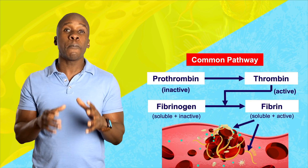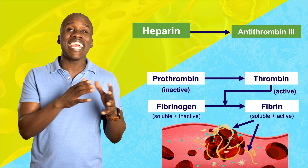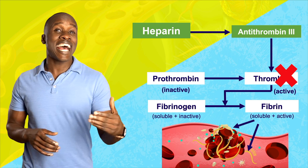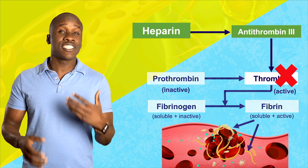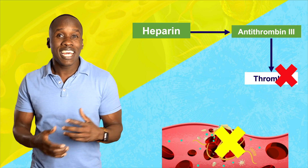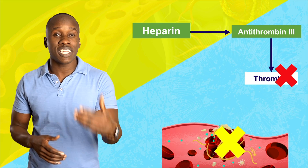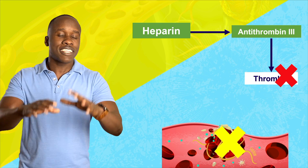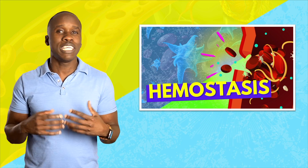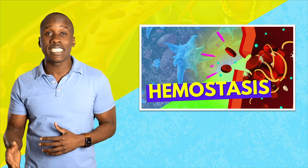When heparin binds to antithrombin-3, it inactivates thrombin. And if thrombin is inactive, it is no longer gonna stimulate the production of fibrin, and that will reduce the chances of forming the clot. If that doesn't make sense, then make sure to check out my video on hemostasis, because I go into all of that in more detail.